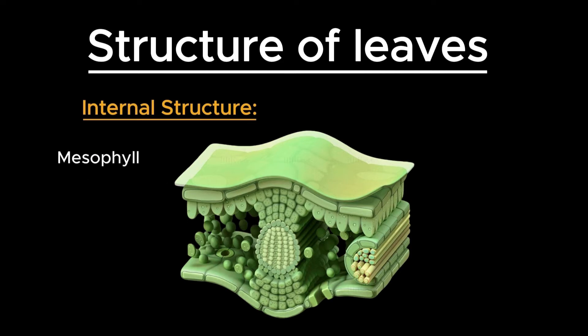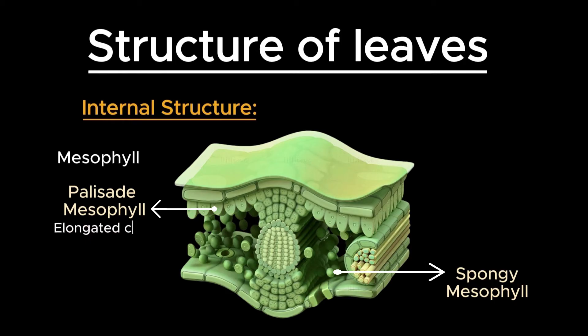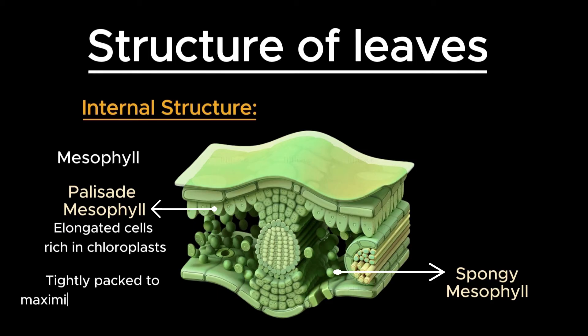Beneath the epidermis lies the mesophyll, which is divided into two layers: palisade mesophyll and spongy mesophyll. Palisade mesophyll consists of elongated cells rich in chloroplasts, the organelles where photosynthesis occurs. The cells are tightly packed to maximize light absorption.